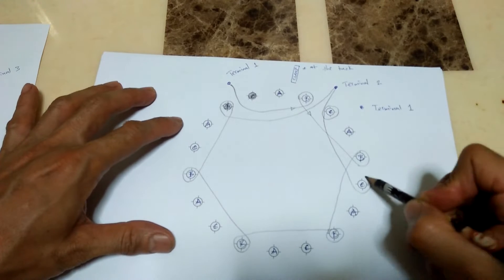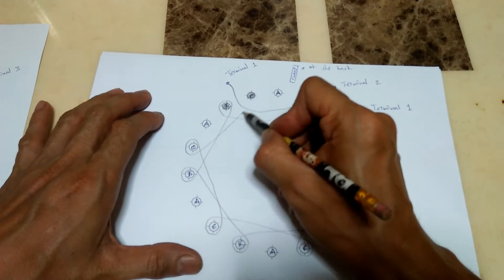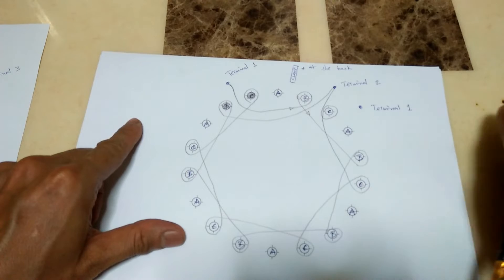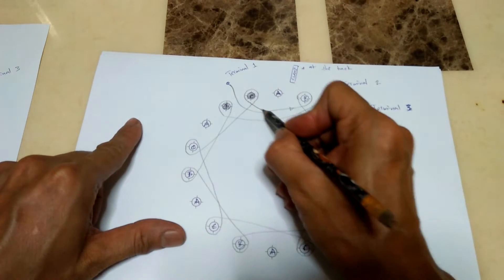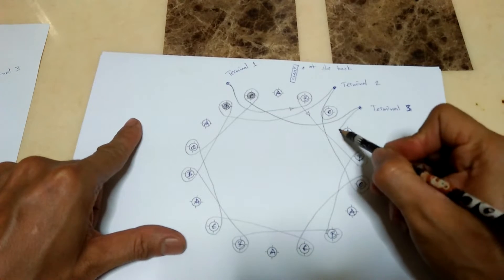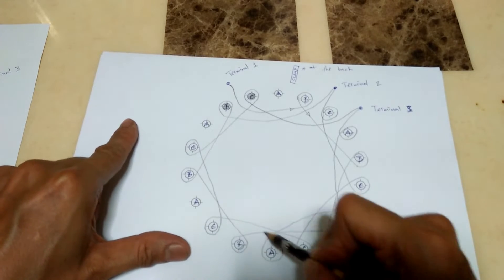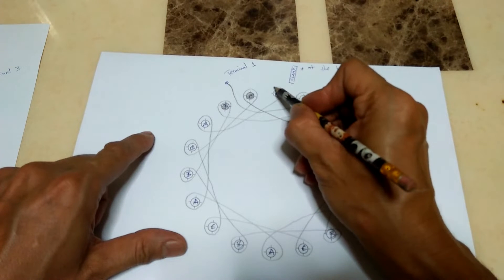After terminal 2, the second coil windings then go to C poles around the stator again and terminate at terminal 3. And lastly, from terminal 3, the remaining coil goes to A poles and terminates back again at terminal 1.